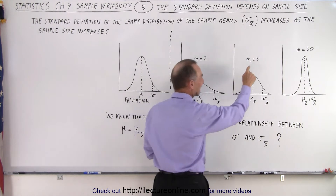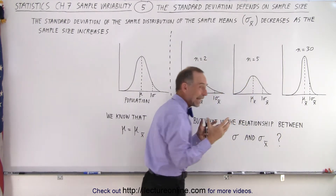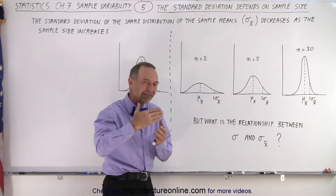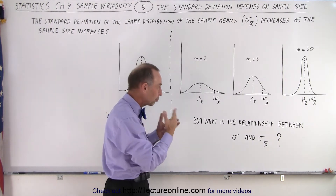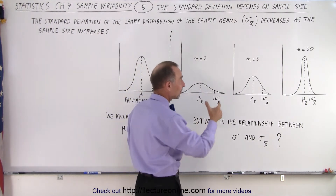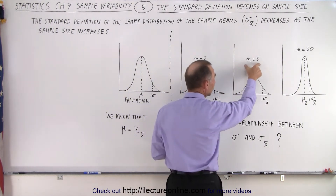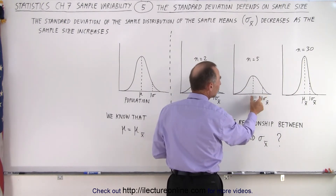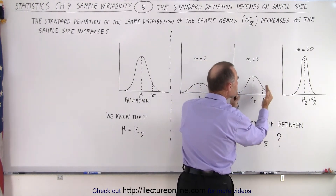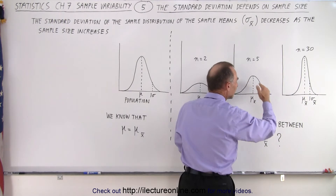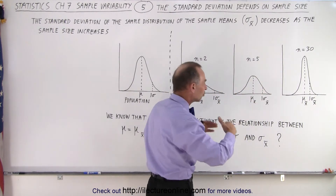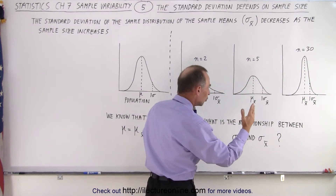As the sample size increases — and again we're dealing here with the distribution of the sample means, the distribution of the sample averages — notice that when the sample size increases it tends to decrease the standard deviation. It tends to bring the variation or the spread of the distribution together.